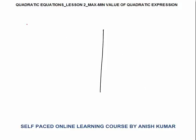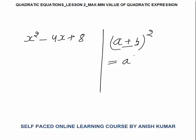Now let's suppose we want to calculate the maximum or minimum value of x² - 4x + 8. I told you the perfect square method. A perfect square is (a ± b)² = a² + b² ± 2ab. This is what we need to use, so we will make a perfect square here. 2ab is a very important, crucial part of this — we have to search where we can find 2ab.